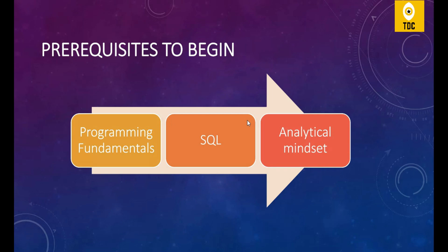If you are at the point where you want to learn data engineering, I'm expecting you to already know these three things. The first is basic programming fundamentals — you should be good in any one programming language, maybe C, C++, Java, or Python. You should also know basic data structures like linked lists and arrays, and understand list and array operations.